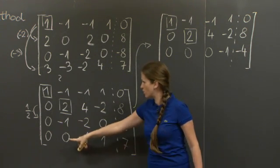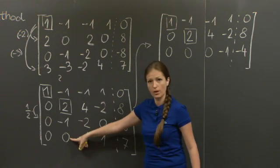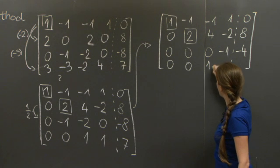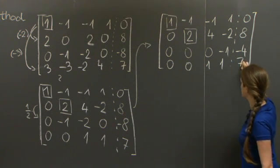And the fourth row already has a 0 here, so I just copy it over: 0, 0, 1, 1, 7.